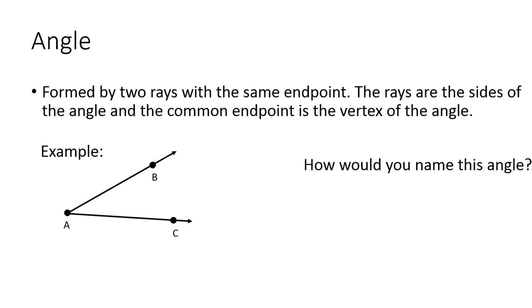Next, we have an angle. An angle is formed by two rays with the same endpoint. The rays are the sides of the angle, and the common endpoint is the vertex of the angle. So how would you name this angle? You can actually name it by three ways. You can name it by saying angle A. The angle symbol is kind of like the less than symbol.